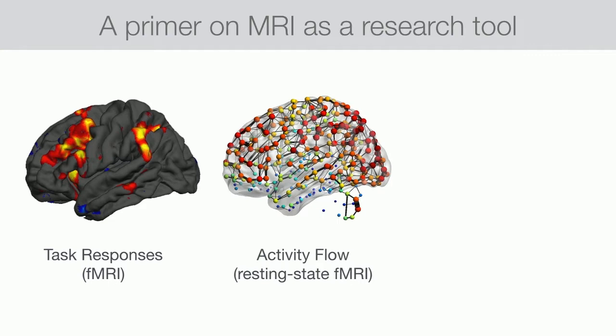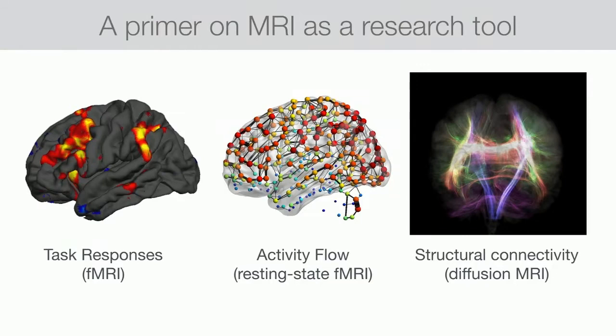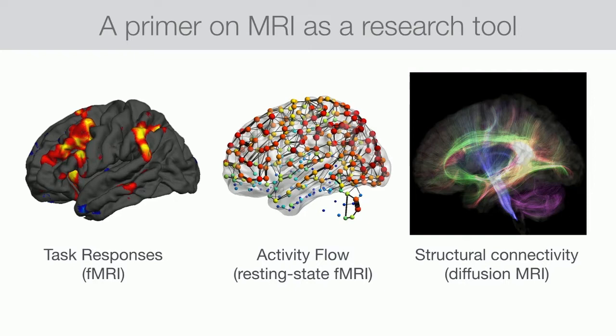We can also use MRI to look at activity flow or information flow in the brain by looking at correlations in hemodynamic signals, to see which areas are talking to each other on a moment-by-moment basis. We even have access to the structural connectivity of the brain using MRI — a map of white matter pathways measured using diffusion-weighted imaging — so we can look at the underlying circuit-level architecture of the human brain. We tend to put all of these together.